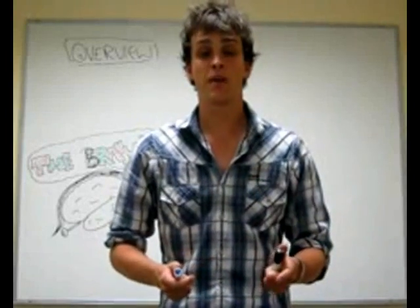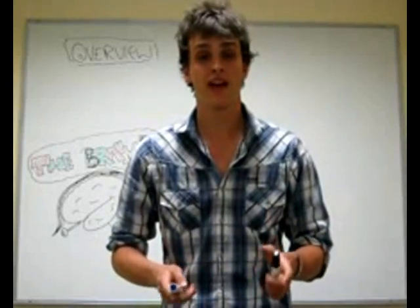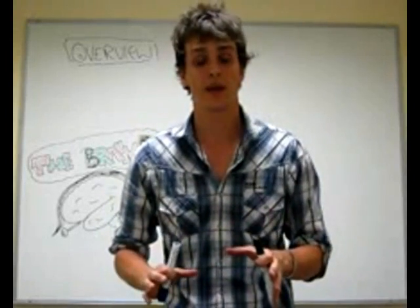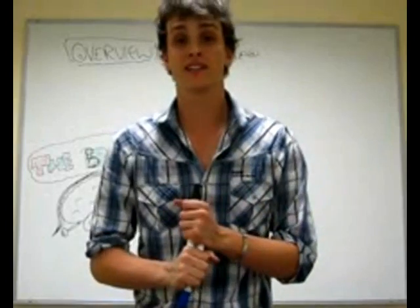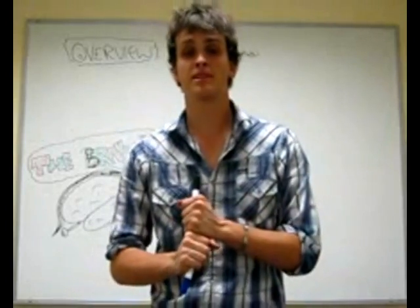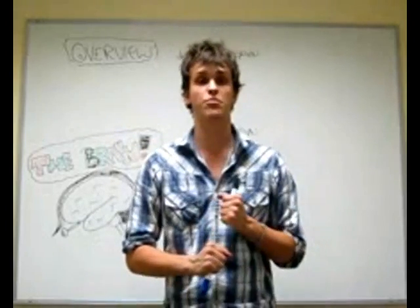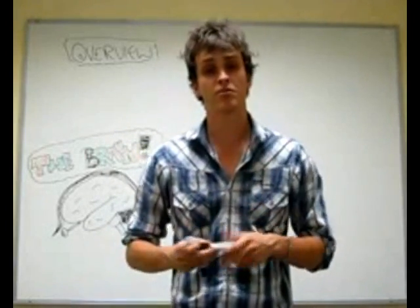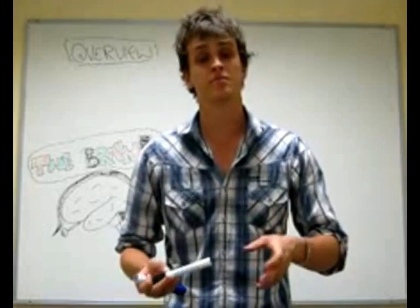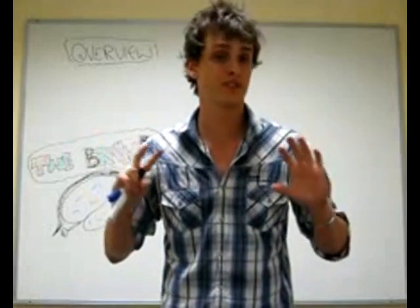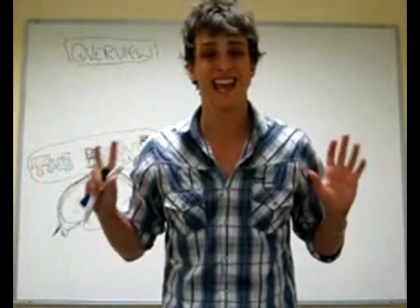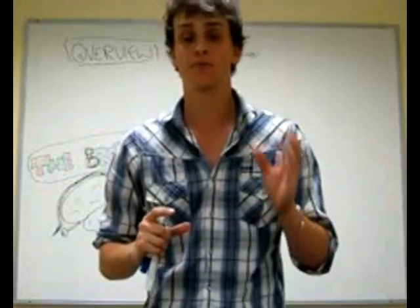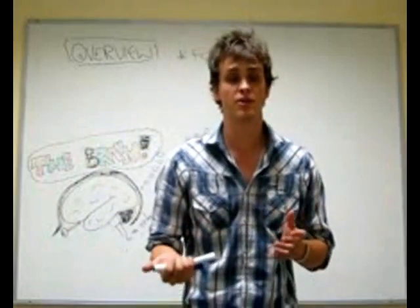So a bit of a recap of everything covered tonight. This is a recap of the nervous system. The central nervous system consists of the brain and the spinal cord. The peripheral nervous system consists of the peripheral nerves — everything outside of that, everything but the brain and the spinal cord.